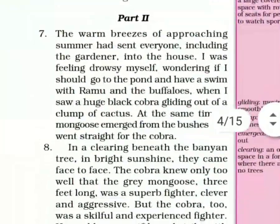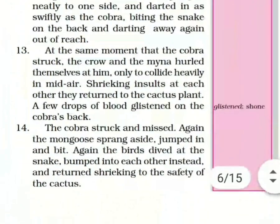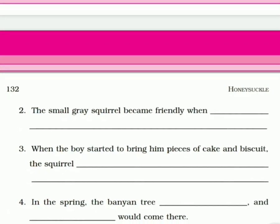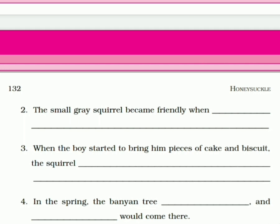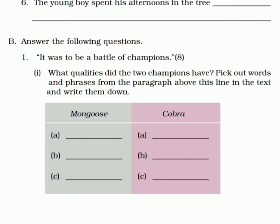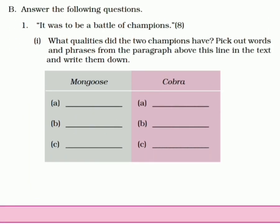Toh dekhenge hum second sentence kya hai: 'The small gray squirrel became friendly...' Jis tarah se humne first sentence ko read karke complete kiya hai, waise hi aapne second, third, fourth, fifth, sixth sentences jo hai, complete karna hai. Iske liye aapko lesson jo hai woh parna padega. You have to read the lesson first, then only you can complete the sentences.